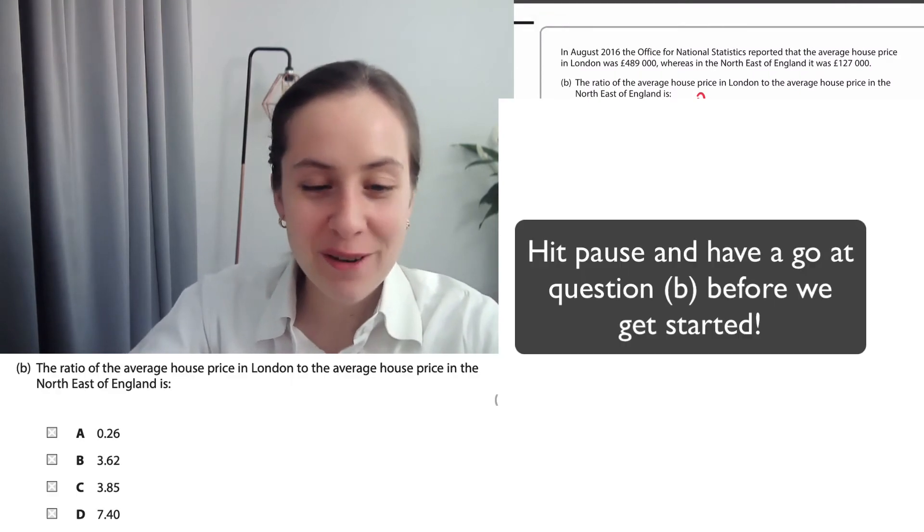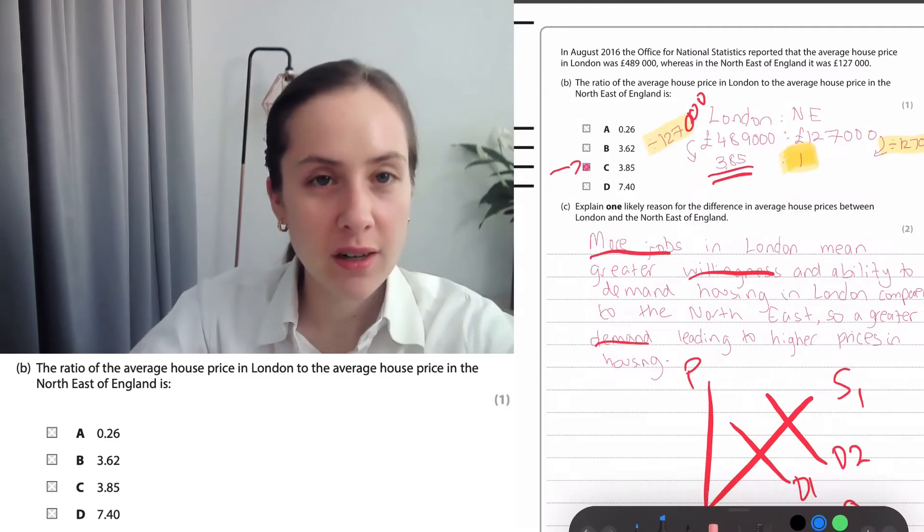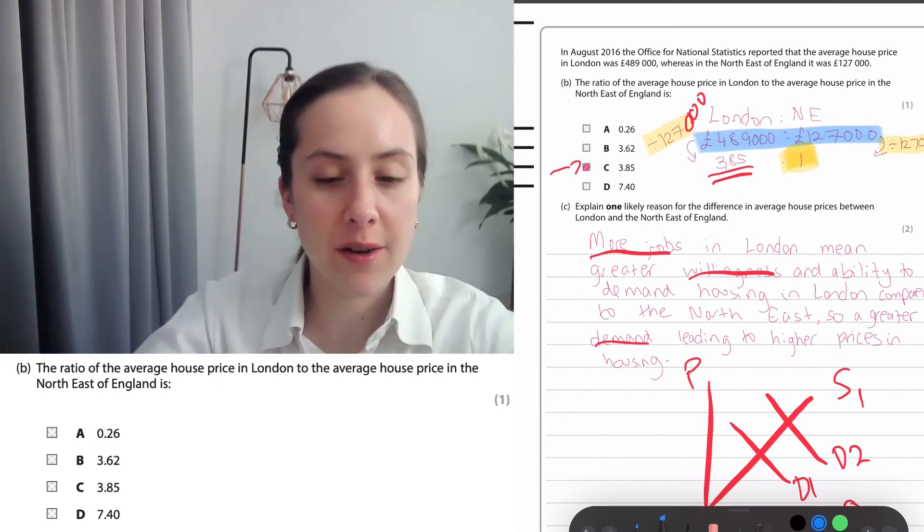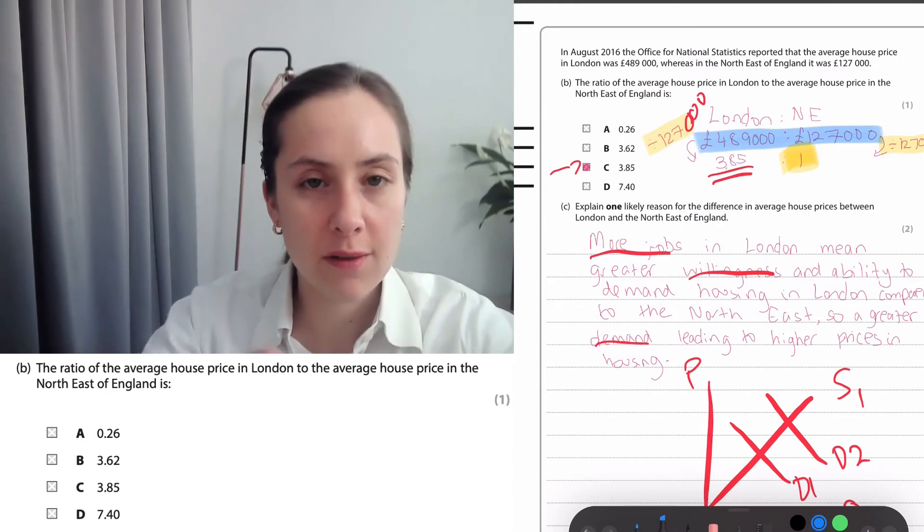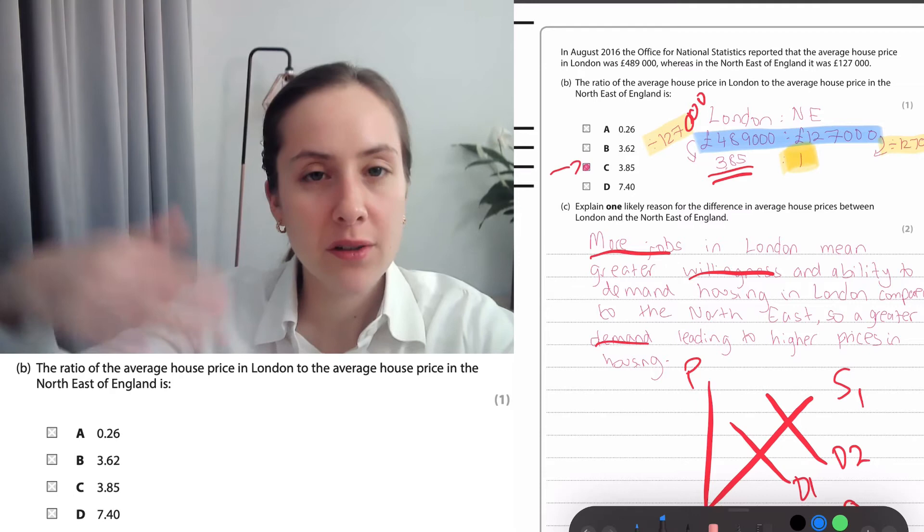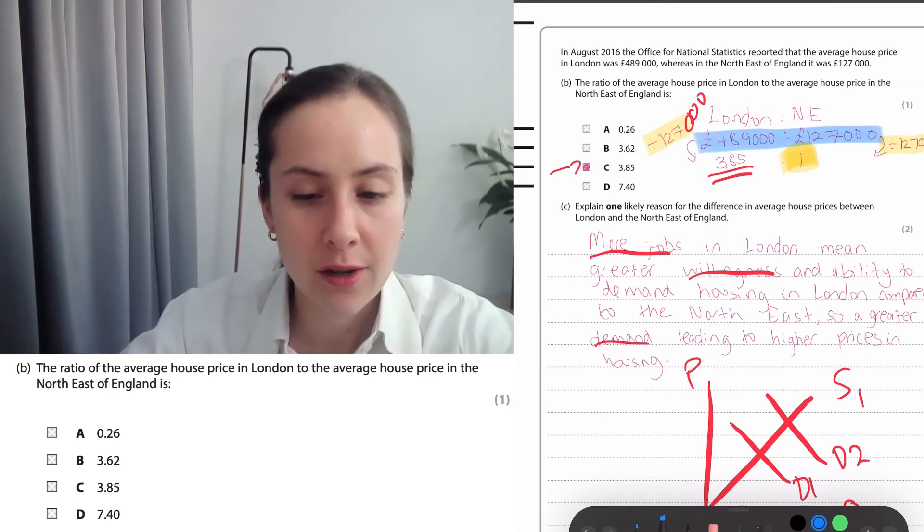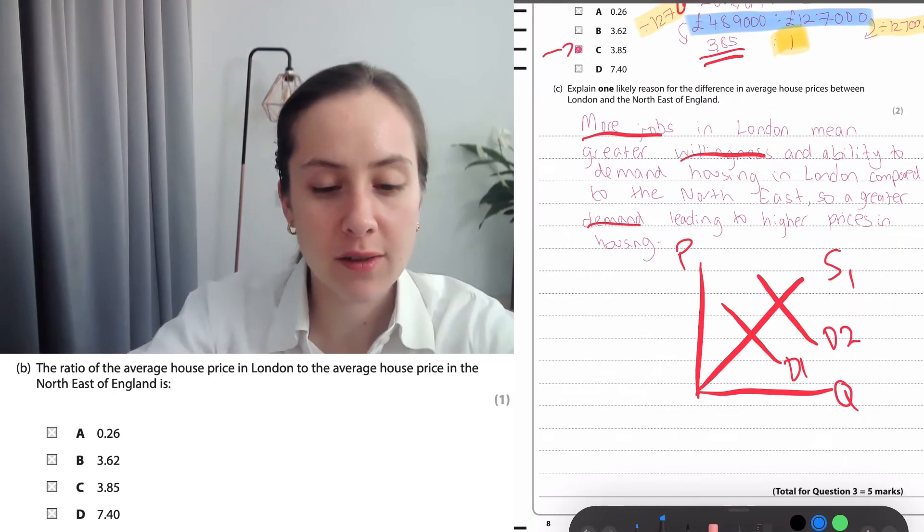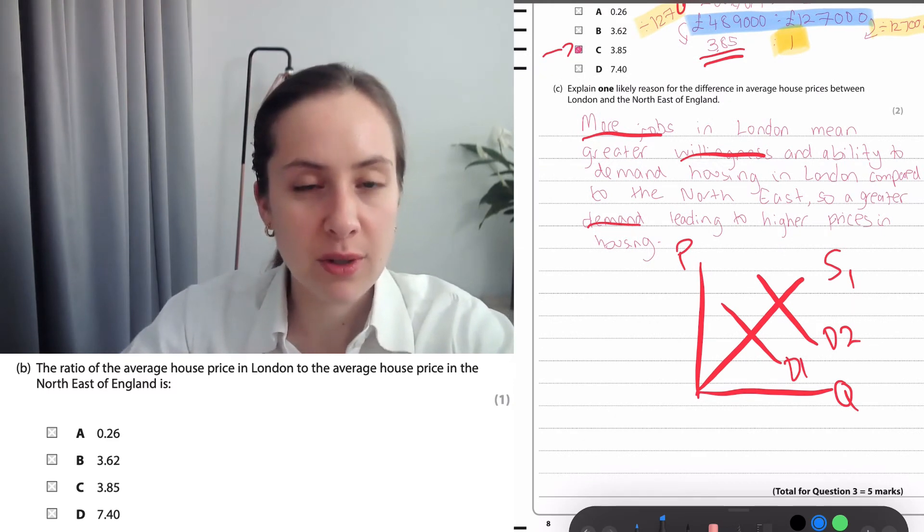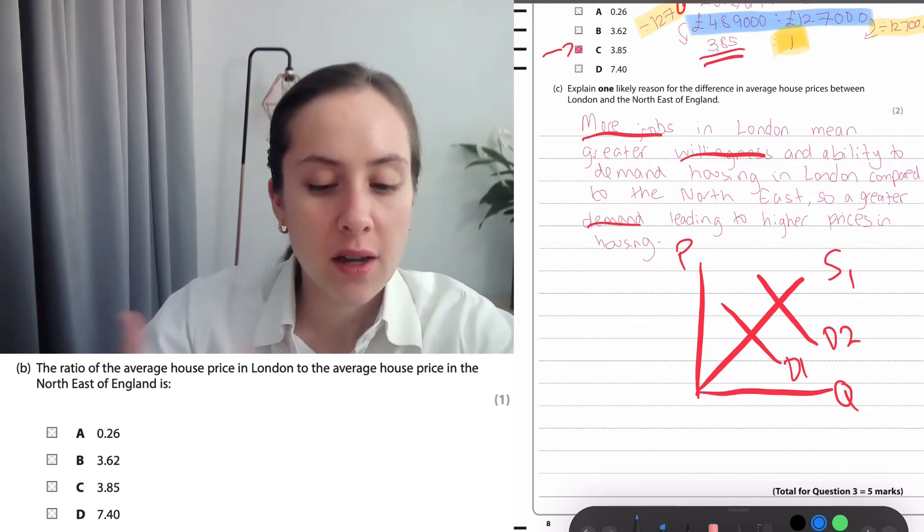This one I found tricky the way they were phrasing it. The way that I approached this, I wrote down the prices and I want to know how many times larger is a London house price compared to the Northeast. So what I did, I divided both sides by 127,000, and that told me that one house in the Northeast, the London house price would be 3.8 times higher. That's my approach: divide both sides to make it equal to one.